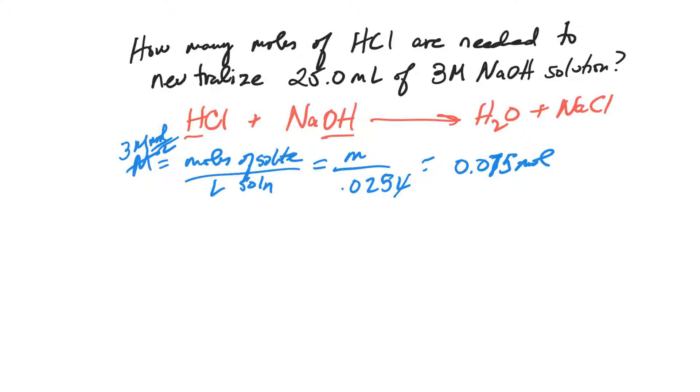What's the relationship? The relationship is 1:1. So for every mole of sodium hydroxide, I need one mole of hydrochloric acid to neutralize it. That means 1 is to 1 as 0.075 is to what? It'll be 0.075 moles of hydrochloric acid.